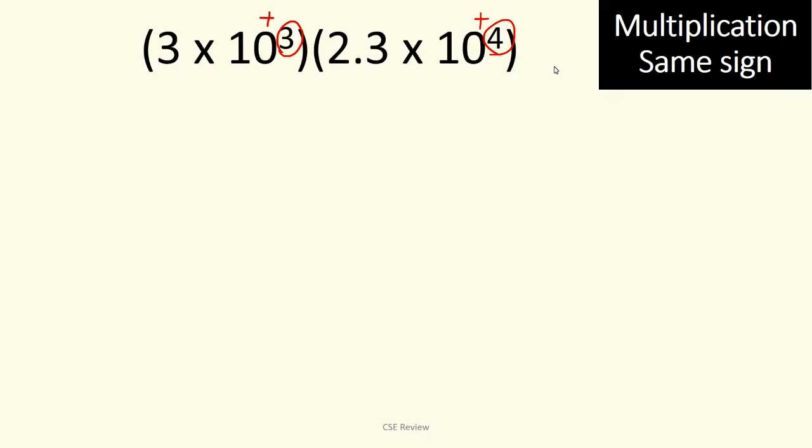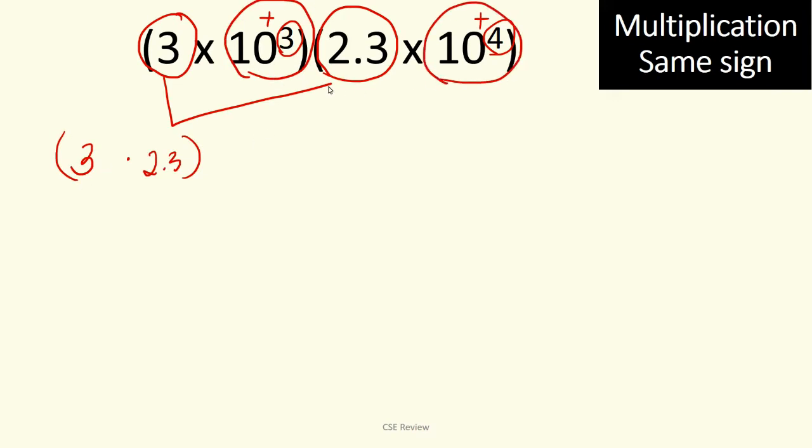Now, what we're going to use here is basically the possibility to combine the first parts first, and then we'll combine the next parts. So what are we going to do? Like this. Whatever the first numbers are, these are their digits, multiply those. So this is going to be 3 times 2.3. And then the second part, which is the times 10, we'll multiply them separately as well. So that means 10 raised to the third power times 10 raised to the fourth power. And then, what we're going to do next is to put them all together.